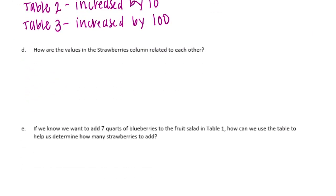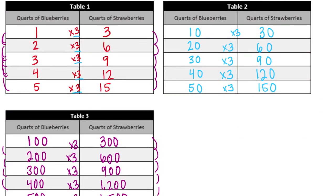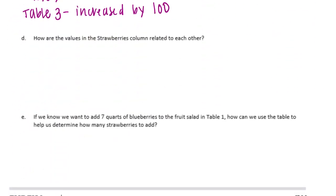Part D: How are the values in the strawberries column related to each other? In Table 1 the strawberries column is increasing by 3 every time. Table 2 was increasing by 30 every time. And Table 3 was increasing by 300. So it went from 3 to 30 to 300.